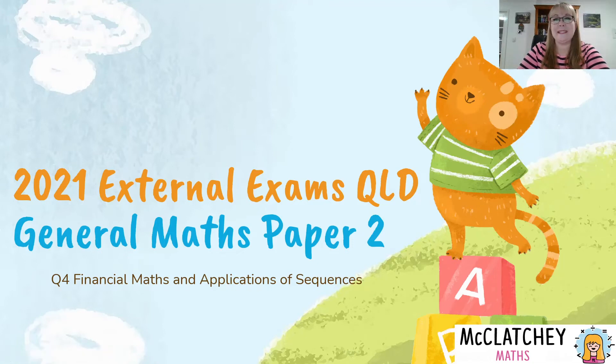Hi, welcome back to McClatchey Maths. My name is Natalie McClatchey and we are continuing our series today on the 2021 external exams in Queensland for general mathematics. We are looking at paper two question four and it's a financial maths question. It also comes under the heading of sequences and I'll talk a bit more about why it falls under both headings later on in the video.